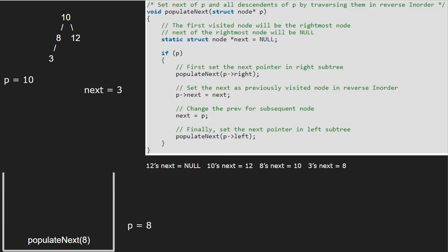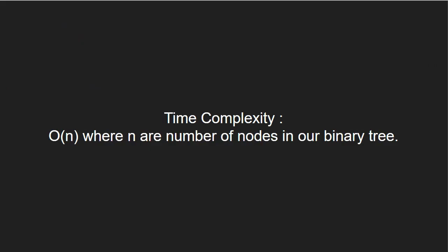We have populated inorder successor for all nodes and finished execution for this program. Now, let us have a look at the time complexity of the program. This code will run in O(n) complexity, where n is the number of nodes in the binary tree. With this, we come to an end of this tutorial.